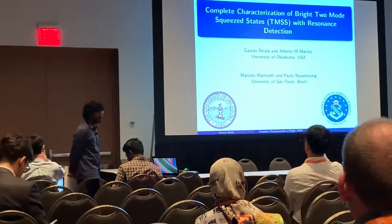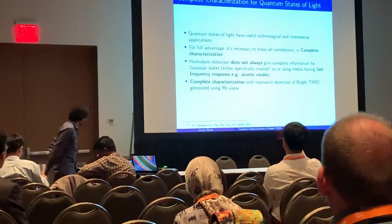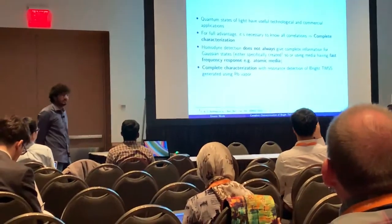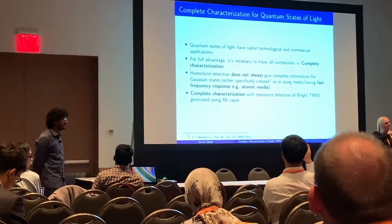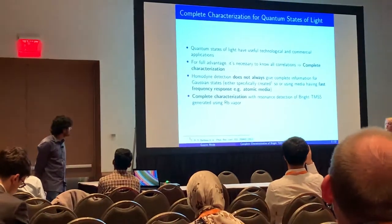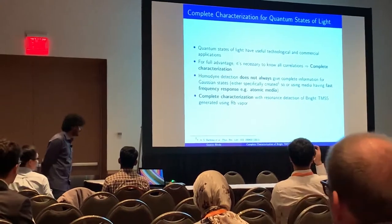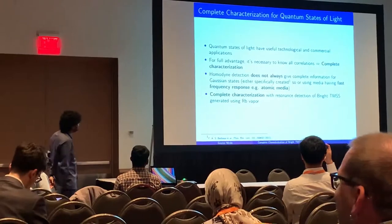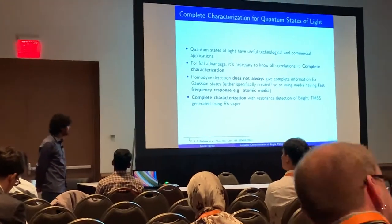This project has also been in collaboration with our collaborators in Brazil. In the past few decades, we have seen increasing applications of quantum states of light, both technological and commercial. In order to take full advantage of these quantum states of light, it is very important to do complete characterization. One well-known method for complete characterization of optical states in the lab is homodyne detection. However, it was shown in 2013 by our collaborators that homodyne detection does not always provide complete characterization for Gaussian states.